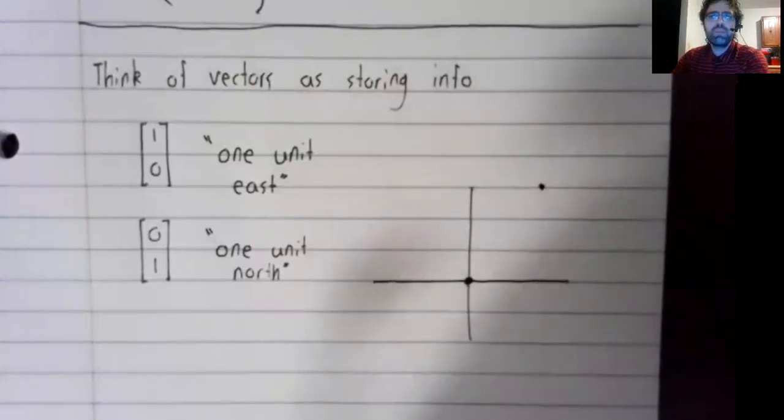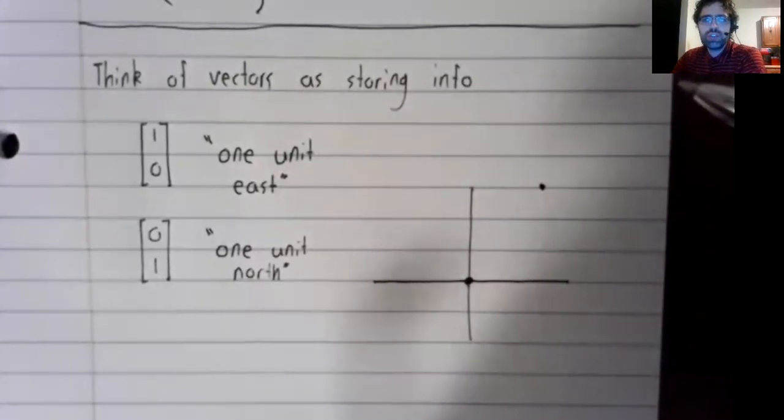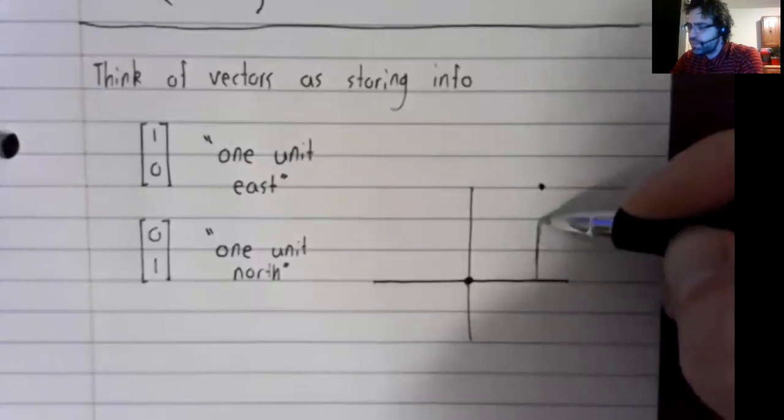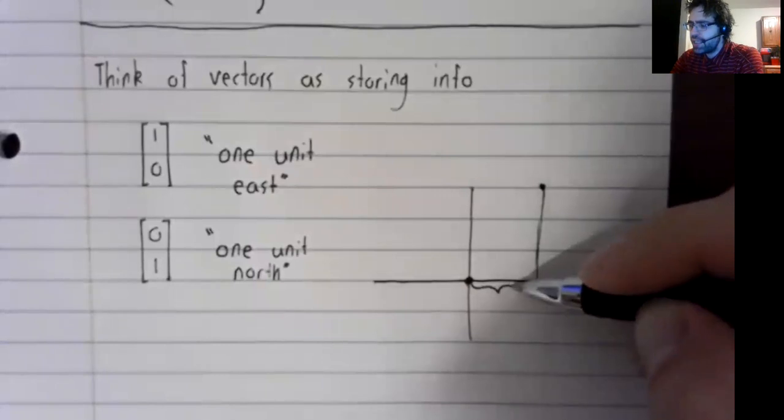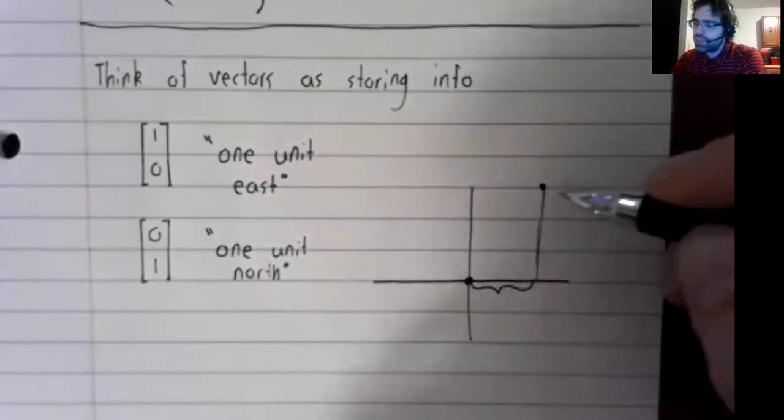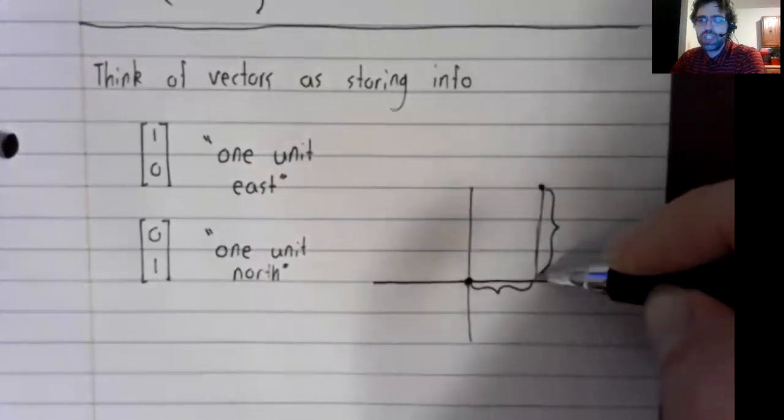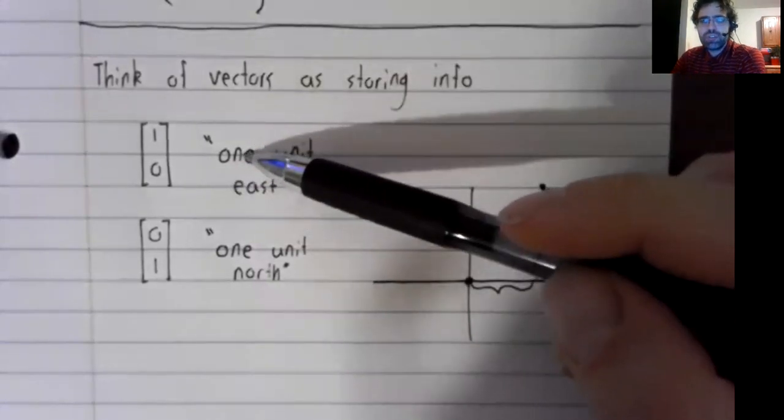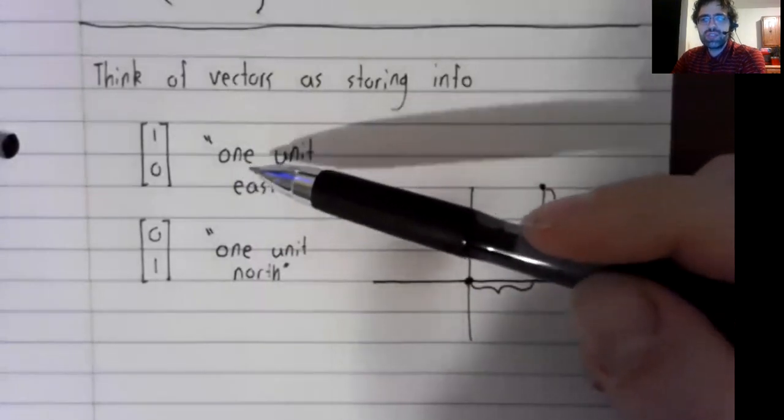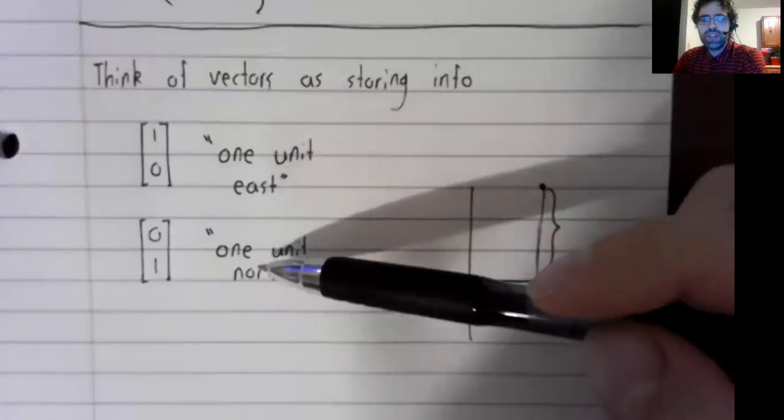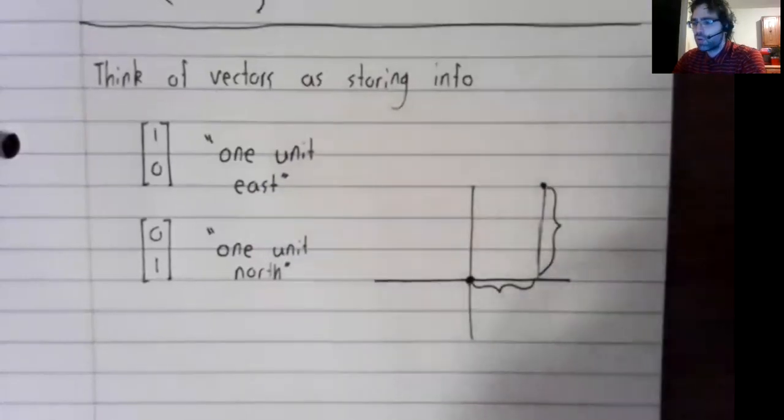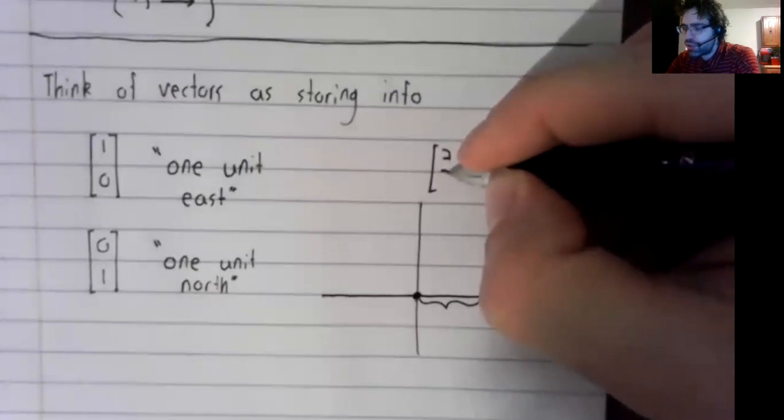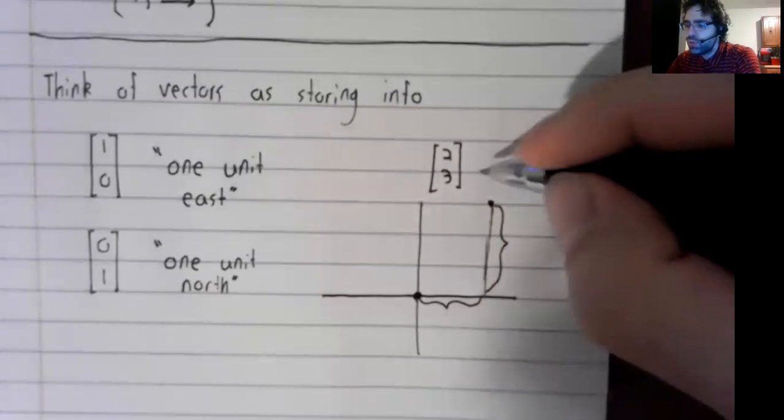If you have a point that you want to describe, you can describe this point by counting eastern units and then counting northern units. And this first vector represents eastern movement. The second vector represents northern movement. And if we have this vector, say, two, three.